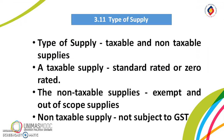First is the type of supply. The type of supply can be categorized into taxable and non-taxable supplies. A taxable supply is a supply which can be standard-rated or zero-rated. The non-taxable supplies are exempt and out-of-scope supplies and are not subject to GST.